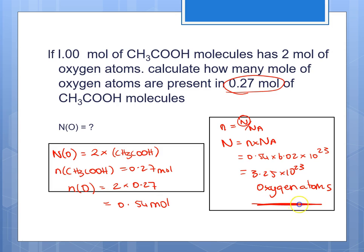Remember to specify what it is you're counting. This is like asking how many chair legs you'd have if you had half a mole of chairs. For every chair there are four legs, so half a mole of chairs gives 4 × 0.5 moles of chair legs. That's the kind of ratio thinking we're applying here.